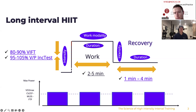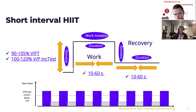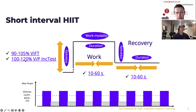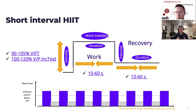The short interval in contrast has shorter bouts of work and short bouts of recovery, anywhere from 10 to 60 seconds of work and 10 to 60 seconds of recovery. These are usually done at a similar or slightly higher exercise intensity — 100 to 120% of the incremental test value. As we often say in HIIT science, there are lots of different ways to skin the cat.